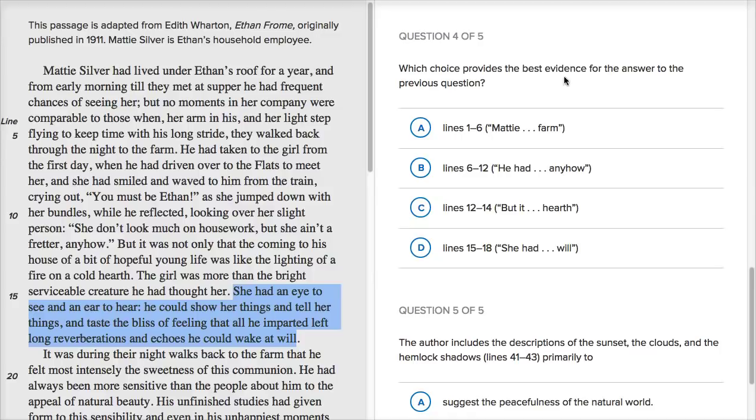Question four. Which choice provides the best evidence for the answer to the previous question? Well, actually, I would - let's see. I think I highlighted them. She had - the girl was more than the bright, serviceable creature he had thought her. She had an eye to see and an ear to hear. He could show her things and tell her things. So, let's see. Which of these are that? This is like line 15 through 16, 17, 18. That's - actually, I highlighted, happened to highlight those exact lines. I like to do these as you can tell in real time so that I'm experiencing it as you would experience it. But luckily, I literally - well, anyway, you get the point. This is the line - these are the lines that say that she was receptive. She had an eye to see and an ear to hear. He could show her things and tell her things. So, definitely go with that.